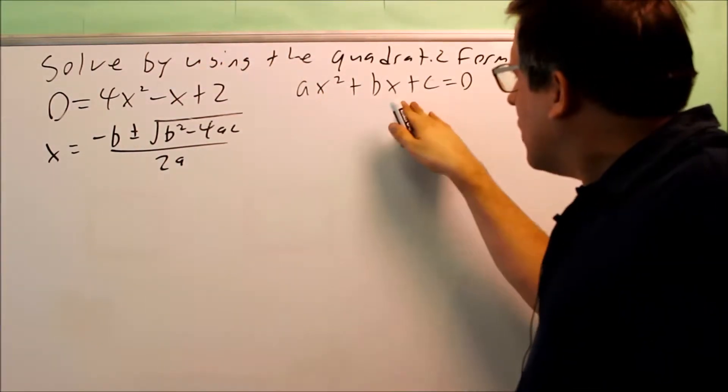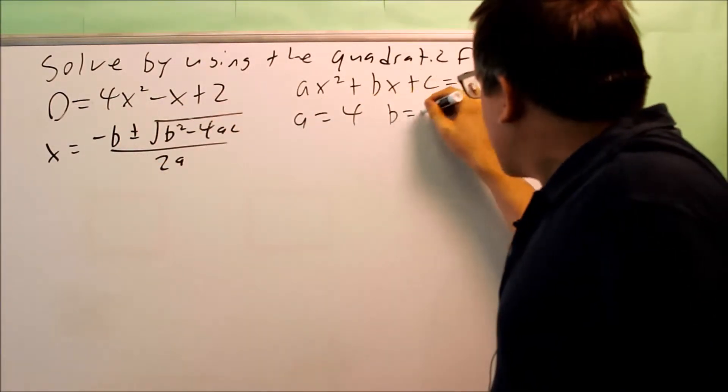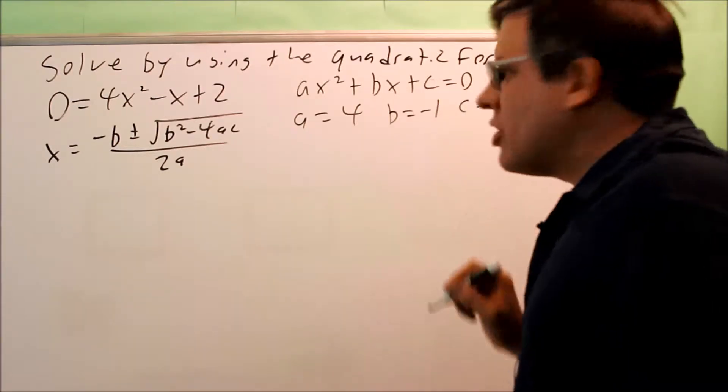And again, A, B, and C, it's written out in this form. So in our problem, A is equal to 4, B is negative 1, and C is equal to 2.